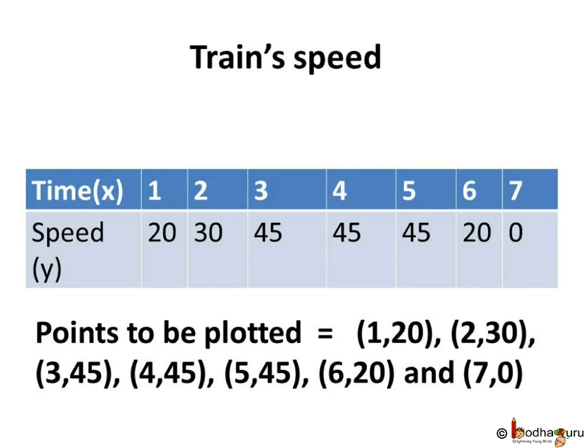And then, as the train kept on moving at the same speed till the 5th minute, it means on 4th and 5th minute, its speed was 45 hours too. So, the next two points are (4,45) and (5,45).